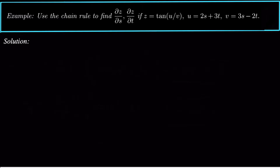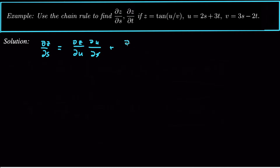Let's first remind ourselves what the multivariable chain rule says. ∂z/∂s is equal to ∂z/∂u — taking the derivative with respect to the first variable, going in alphabetical order — multiplied by the derivative of the intermediate variable u with respect to s, plus ∂z/∂v, the derivative of z with respect to the second variable, multiplied by the derivative of the second variable with respect to s.